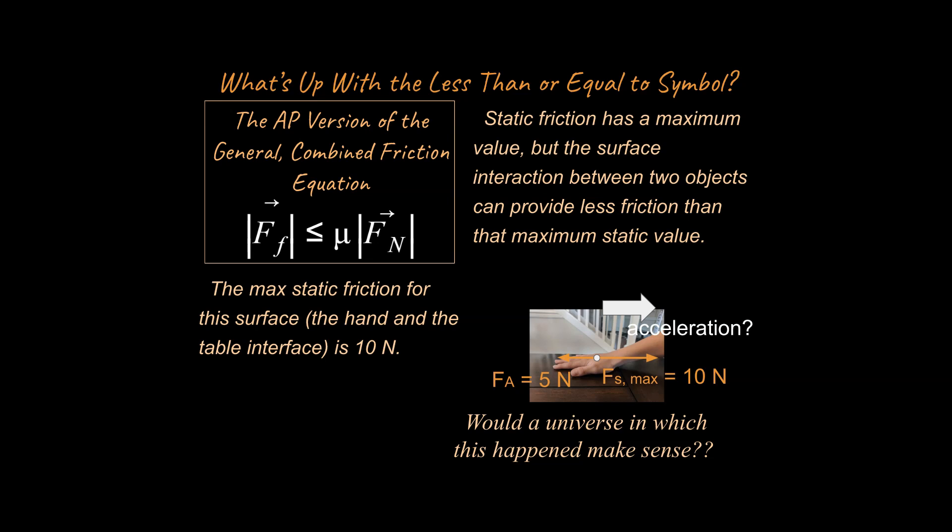I'm not even sure what all of the ramifications would be. But essentially what would happen is every time you tried to move something but were not able to move it because friction was too great, you would get accelerated backwards. That would not make sense. And so because of that, we want to say, well, there is a maximum calculated amount of friction, but there can be less than that provided, especially in a static sense.